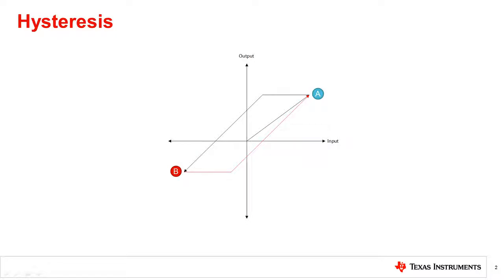However, the path from point B to point A was different from the path from point A to point B. In other words, for the same input, the current output depends on the previous state of the output.